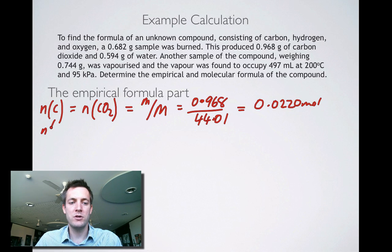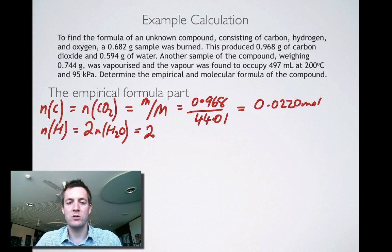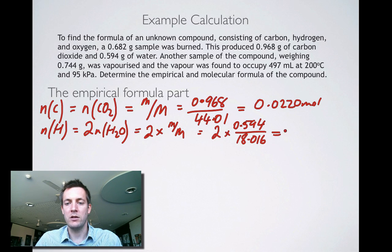The number of moles of hydrogen, well, that's equal to twice the number of moles of water. So doubling the number of moles of water is going to give us the number of moles of hydrogen. So that's 2 times the mass over the molar mass, which is 2 times 0.594 over 18.016, and that equals 0.0659 moles.